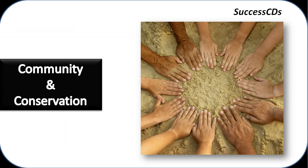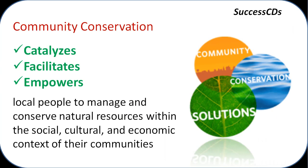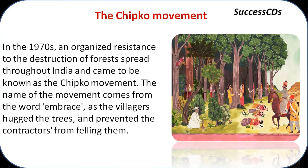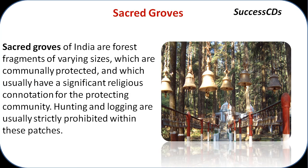Community plays an important role in conservation of wildlife. Local people can help manage local resources and inspire others globally. Community conservation facilitates and empowers local people to manage and conserve natural resources within the social, cultural, and economic context of their communities. One example is the Chipko Movement — in the 1970s, when widespread forest destruction occurred, people of villages used to hug trees to prevent them from being cut by contractors. Another example is sacred groves — forest fragments protected due to significant religious beliefs, where hunting and logging are strictly prohibited.